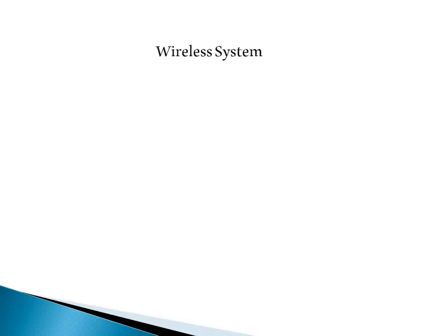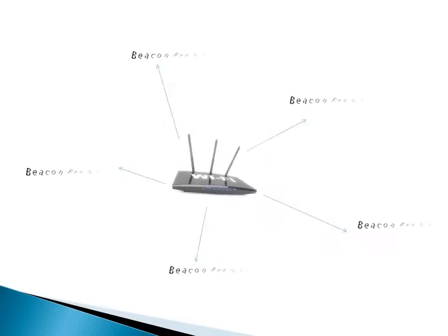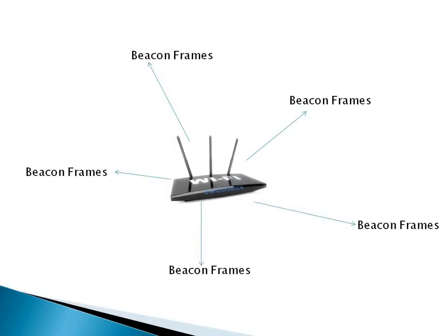First of all you need to understand the working of a wireless system. Every time you turn your wifi on, your device starts sending probe requests for any wifi access point in its range, and every router sends out beacon frames for showing its existence to the devices.